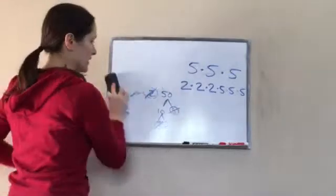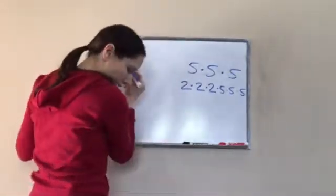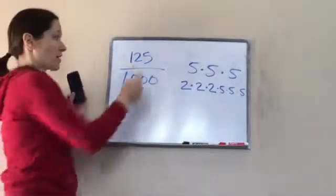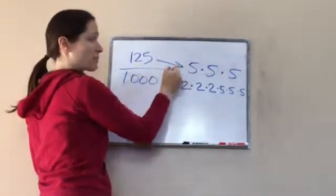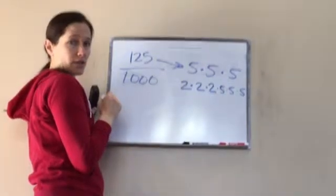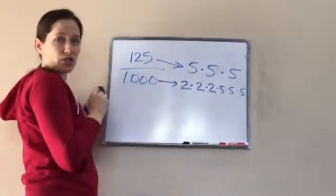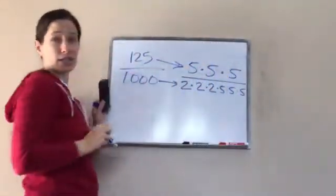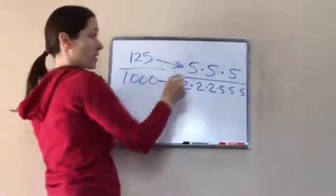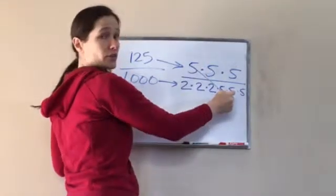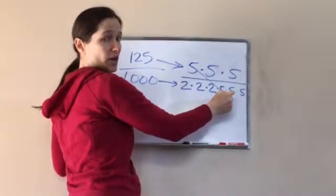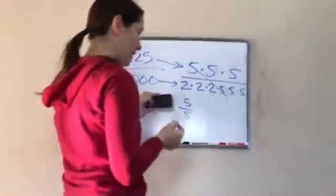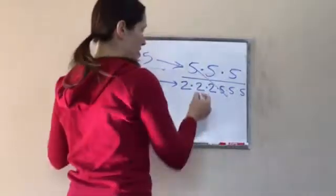The original problem was this: 125 over 1,000. This was 125's prime factorization, right? And this was 1,000's prime factorization, right? So we're going to put this over this. And guess what you can do? The 5 and the 5 cross out and make one whole. Because remember, if you saw 5 over 5, what would it make? One whole, right. So that makes one whole.